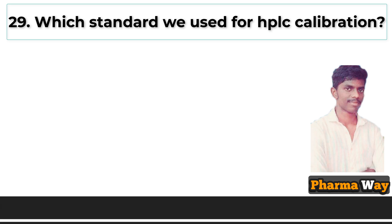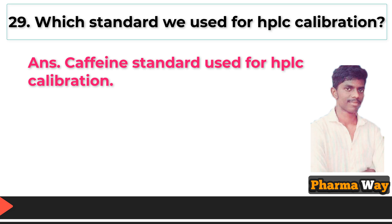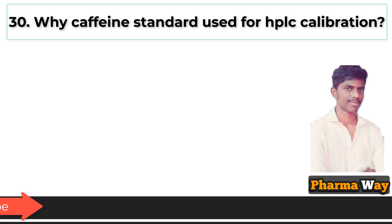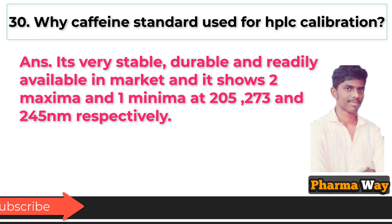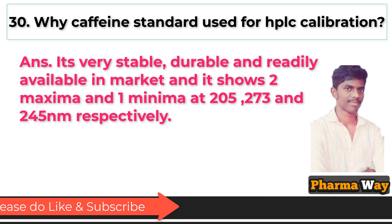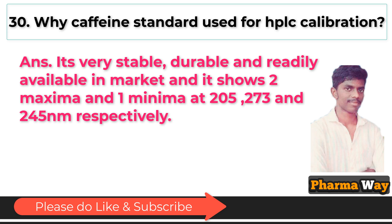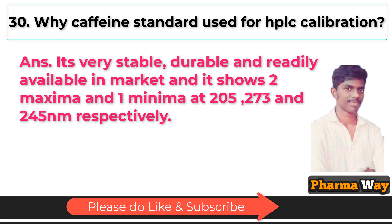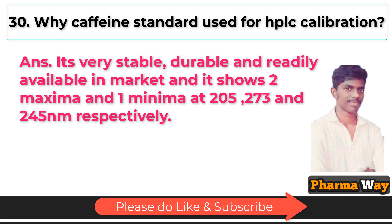Which standard is used for HPLC calibration? Answer: Caffeine standard is used for HPLC calibration. Why is caffeine standard used? It is very stable, durable, and readily available in the market, and it shows two maxima and one minima at 205, 273, and 245 nanometers respectively.